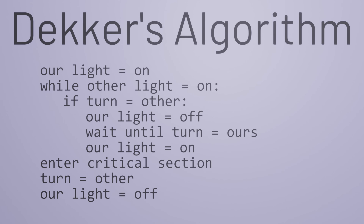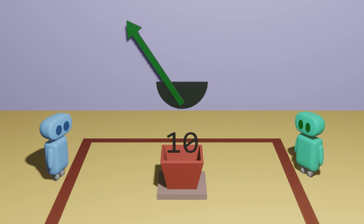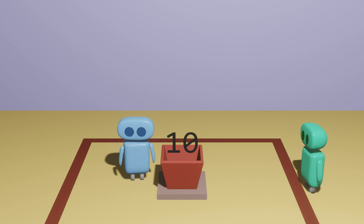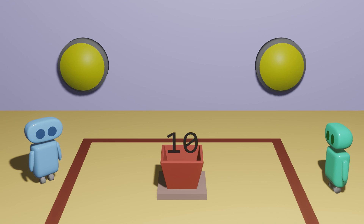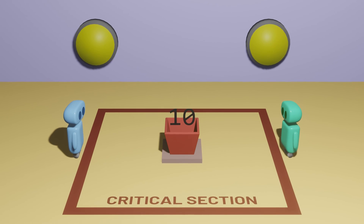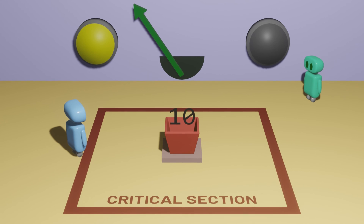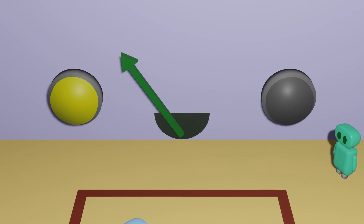It's a lot of precision for what might sound like a simple problem, but we need that precision. Without signaling, we might end up with race conditions where two programs enter the critical section at the same time. Without keeping track of turns, we might inadvertently let one faster program have all the access, starving the other slower program of the access it needs. And without turning off our own light when it's the other program's turn, we could get stuck in deadlock. These are the kinds of challenges we need to deal with when thinking about concurrency. Dekker's algorithm isn't the only way to solve this problem, but it was one of the first algorithms invented to do so, and it works without any special hardware — just three pieces of data: two signal lights and one turn indicator to help ensure two programs can share access to data without conflict.